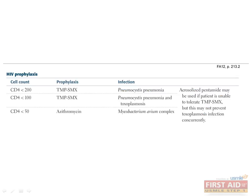It is important to remember at what CD4 counts an HIV patient is likely to develop an infection. For HIV patients with CD4 counts less than 200, provide prophylaxis against Pneumocystis pneumonia with TMP-SMX. Patients with CD4 counts less than 100 should receive TMP-SMX to cover not only Pneumocystis but also toxoplasmosis. Finally, patients with CD4 counts less than 50 should receive TMP-SMX plus azithromycin to also cover Mycobacterium avium complex.